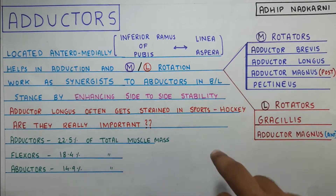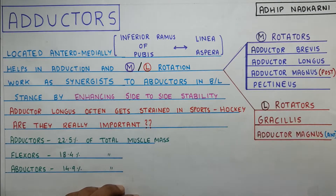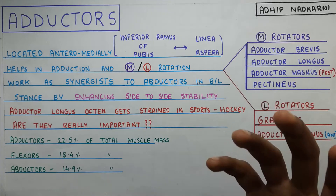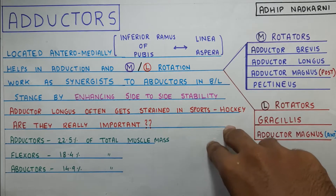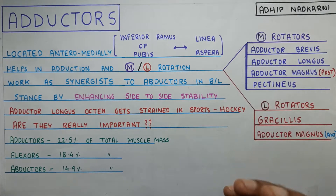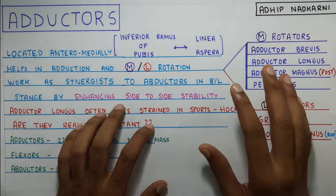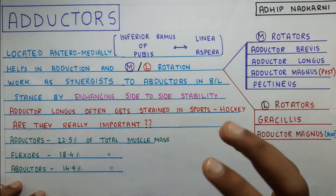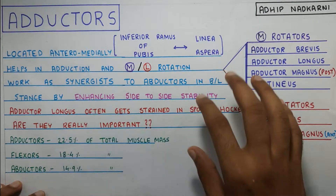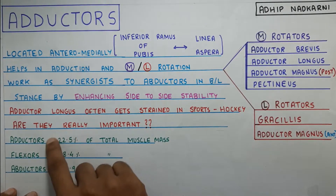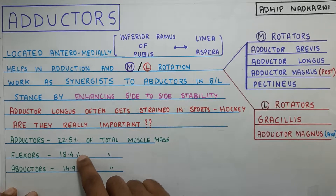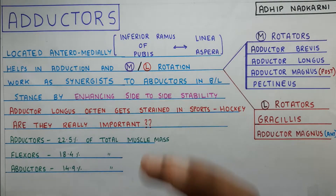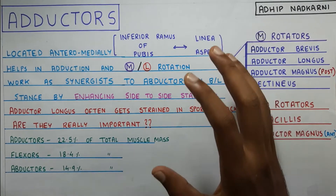You can see flexors are required when walking to push you forward, and extensors are important to propel you forward. Abductors are very important in maintaining unilateral stance. So what is the actual role of adductors? Well, it's not entirely clear, but what we know is that adductors form a major chunk of leg muscles — 22.5% of all muscle mass around the hip joint. Flexors form only 18.4% and abductors 14.9%. So adductors definitely play a major role in lower limb function.